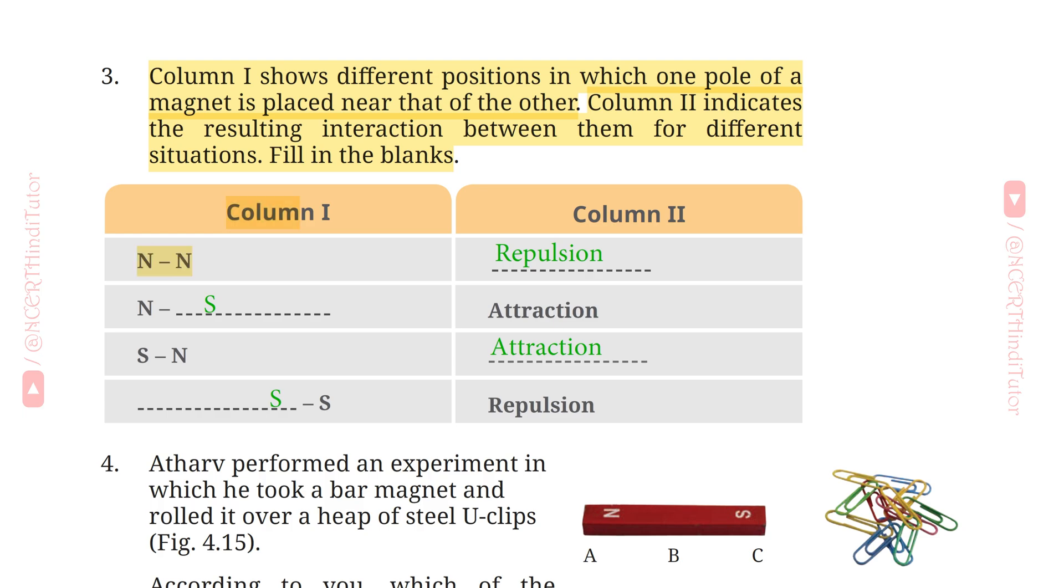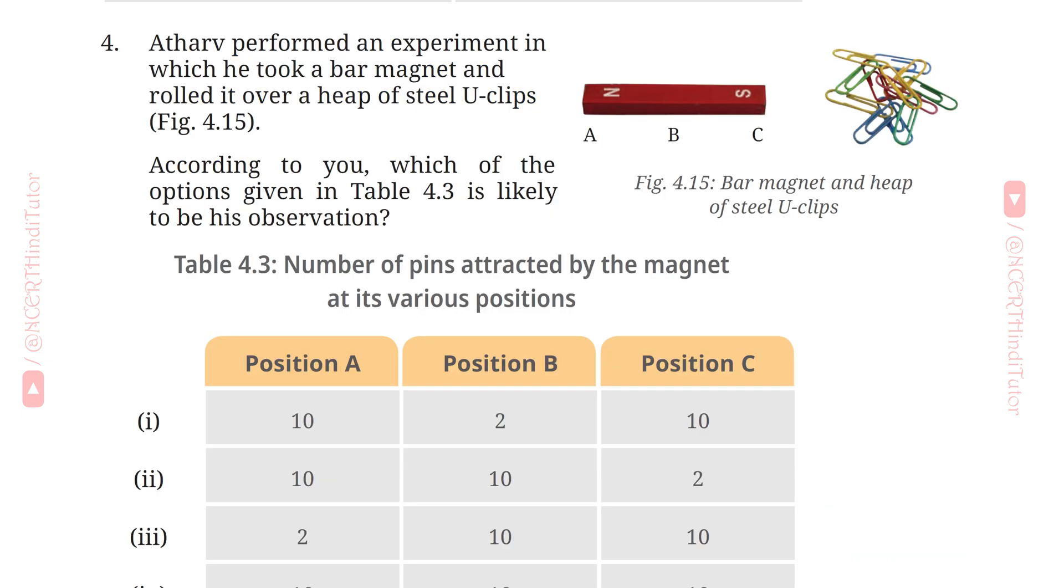Column 1: North-North, Column 2: Repulsion. Because like poles repel each other. North-South: Attraction. Because opposite poles attract each other. Similarly, South-North: Attraction. South-South: Repulsion.